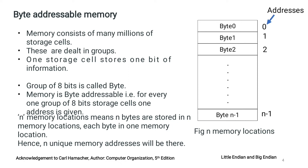Before considering some examples for understanding Big Endian and Little Endian, we shall see how memory is organized. Memory is byte addressable, meaning in each memory location, one byte of data can be stored. One byte means 8 bits, so there are 8 storage cells in one memory location. Each memory location has a unique address.